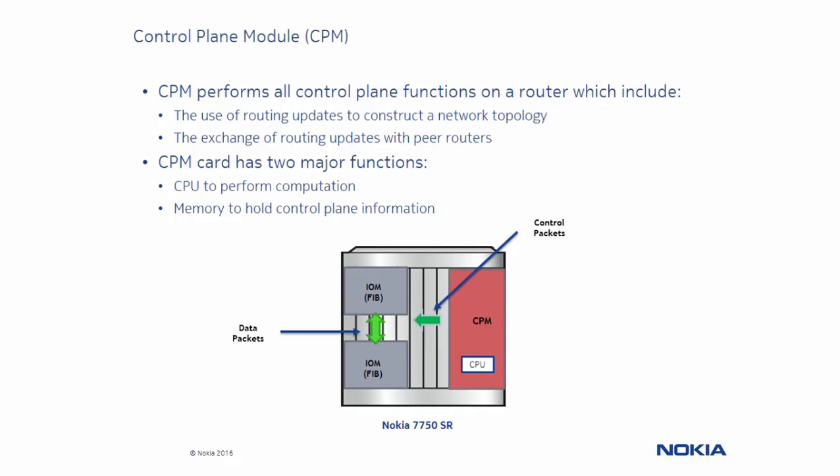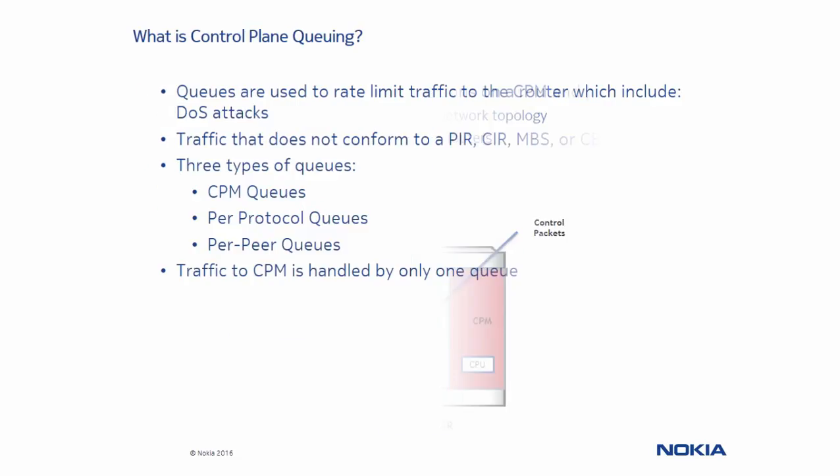The CPM card has two major functions: CPU to perform computation and memory to hold control plane information. This is why it is very important that the CPM module is protected from attacks that can cause degradation of the service or even make it unavailable.